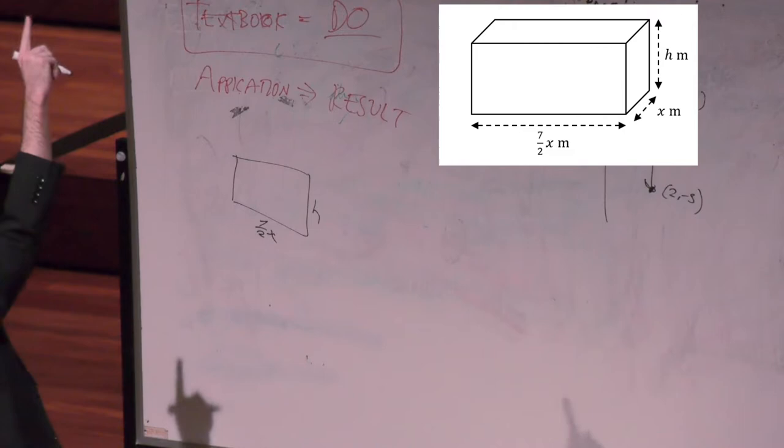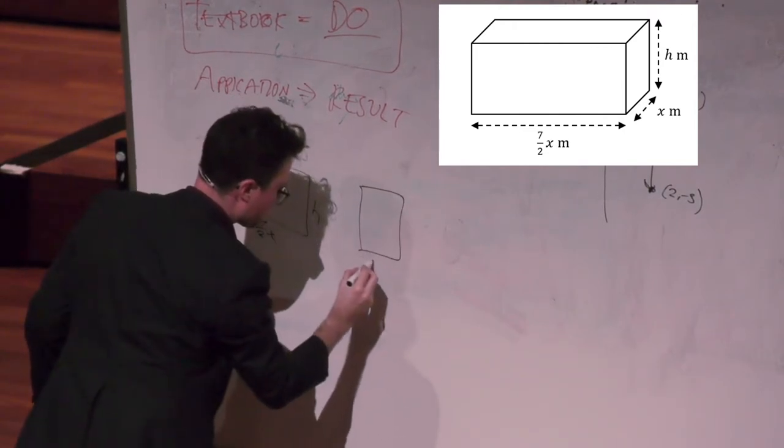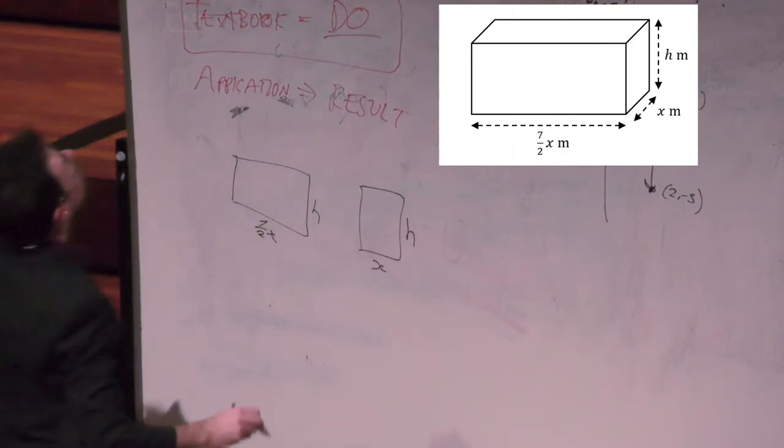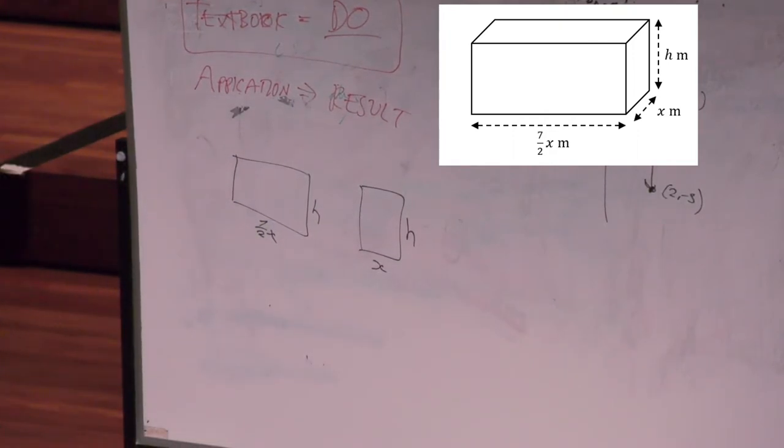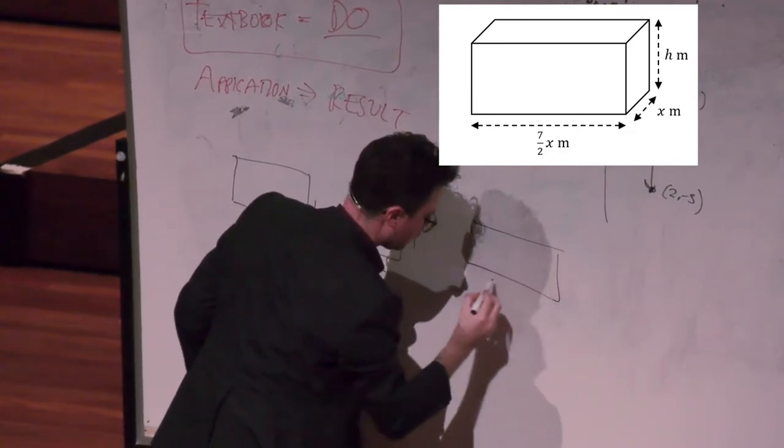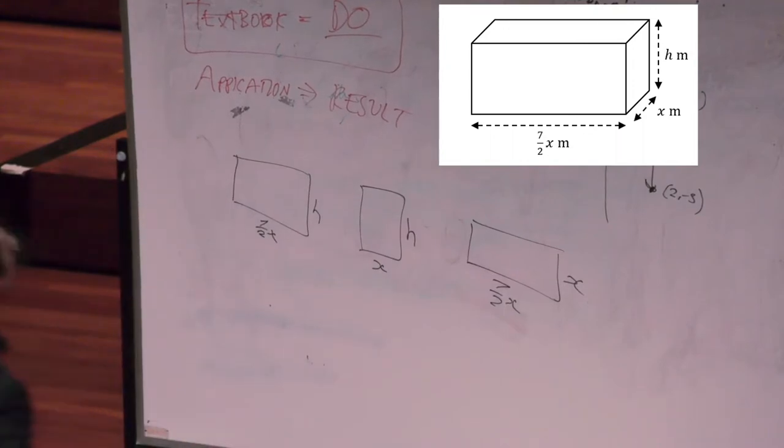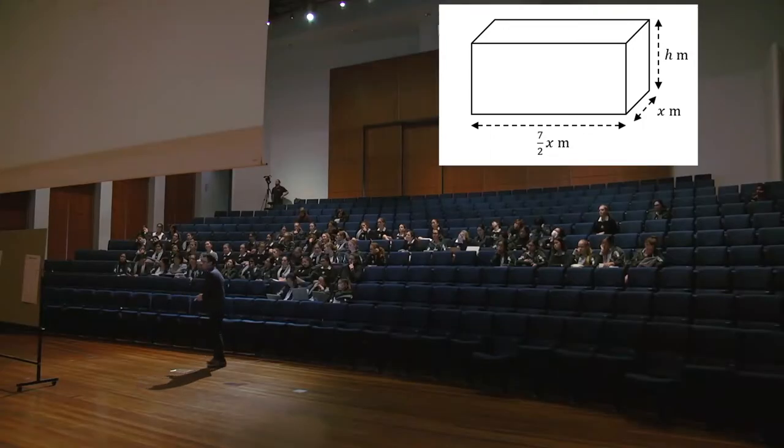We've got another thing on the side, which is x and h, which looks like that. We've got the base of it, which is 7 on 2x times x, which would look like this. And that's pretty much it.